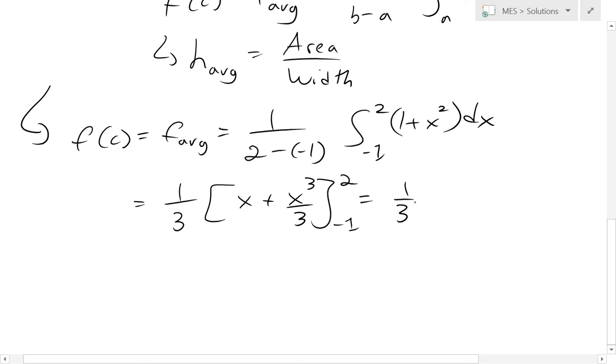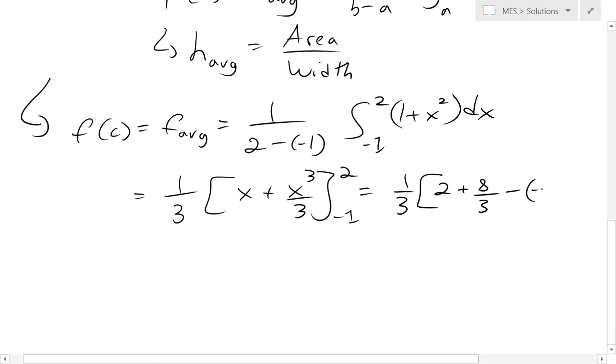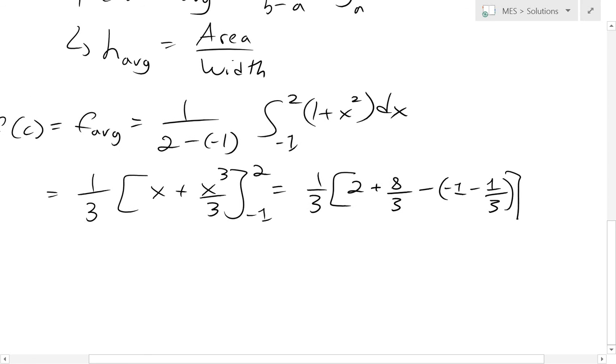This equals 1/3. Plug in the 2, so we get 2 + 2³ which is 8, divided by 3. Now we have to subtract with this one inside. Put -1 inside, it's going to be -1. And this is going to be -1 cubed, that's just going to be -1 as well. There's negative in there because it's an odd power.